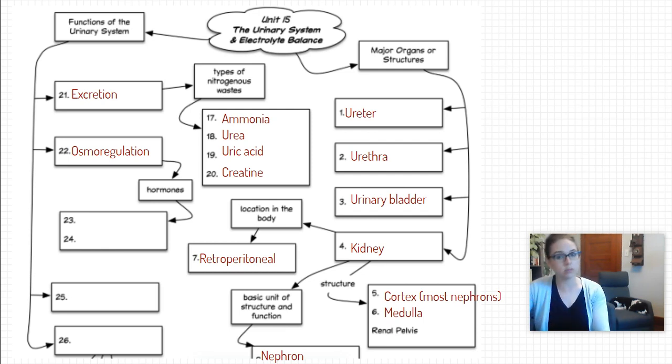And so the main hormones that control this osmoregulation is antidiuretic hormone ADH. That job is to make sure you conserve water. So if something is inhibiting ADH like caffeine or alcohol you're going to urinate more often.